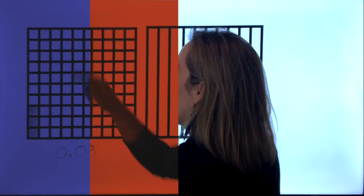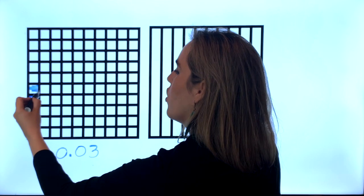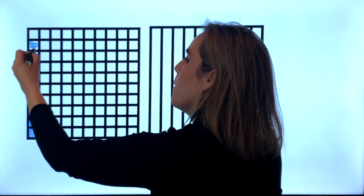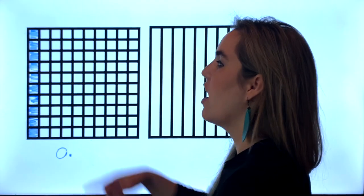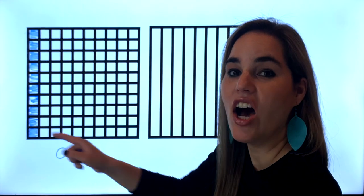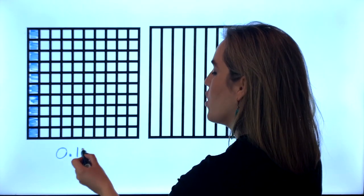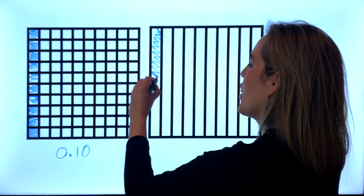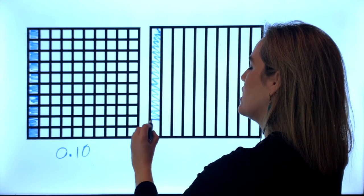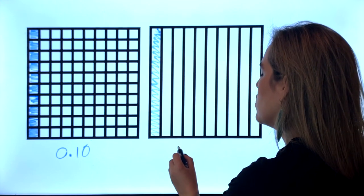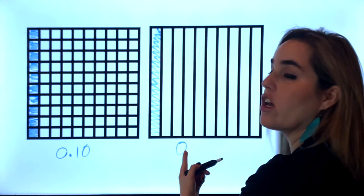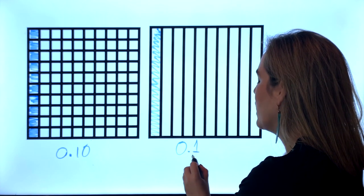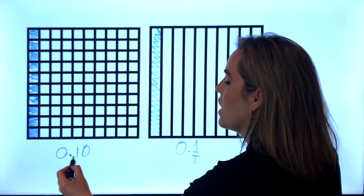Now you have ten hundredths, but you also have one tenth. As you can see these are equivalent. So this will be zero, zero, zero because we don't have a whole, but we have one tenth. And here we have ten, one hundredths. One tenth is equivalent to ten hundredths.